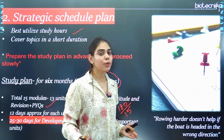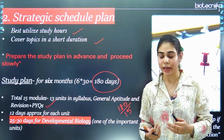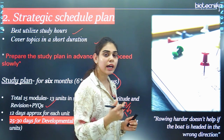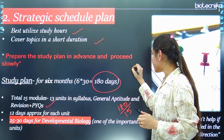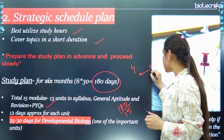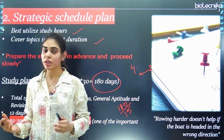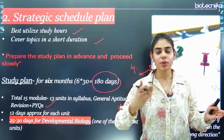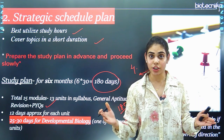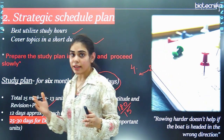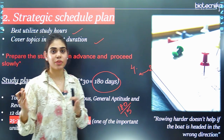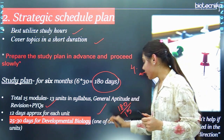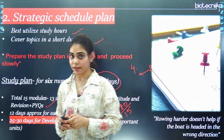There are some units like Unit 12 (Applied Biology) that is always paired with Unit 13 (Methods in Biology), and Unit 4 (Cell Communication and Cell Signaling) is always paired with Unit 2. Unit 9 (Diversity of Life Forms) only requires PYQ practice. By redistributing these days, you can get 25 to 30 days for developmental biology, because many units are prepared together. You can dedicate more hours to this unit as it is one of the most important under CSIR NET Life Sciences.